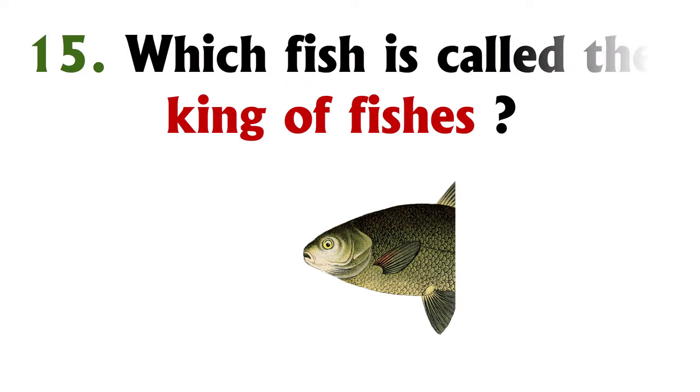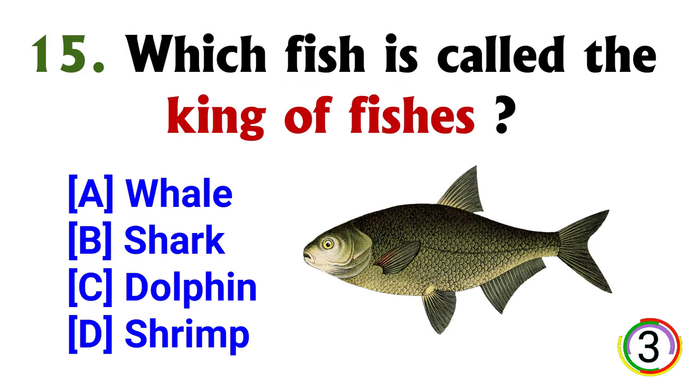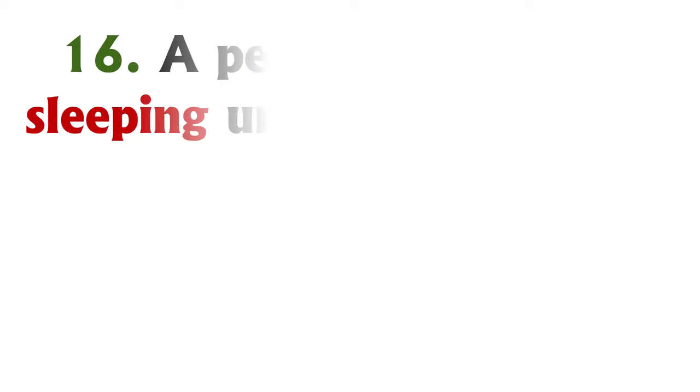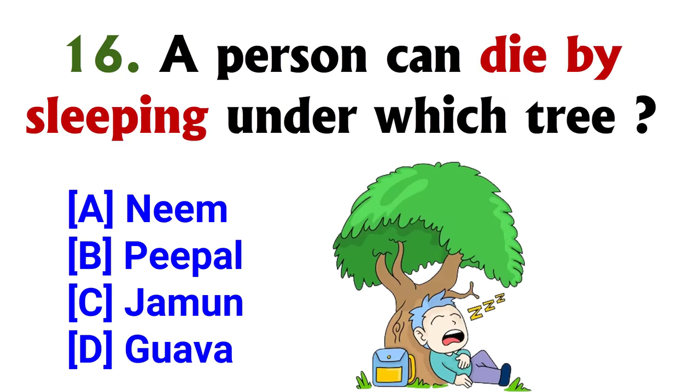Which fish is called the king of fishes? Option B, shark. A person can die by sleeping under which tree? Option B, peepal.